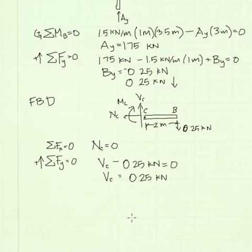Summing forces in the y direction: our internal shear force V_C pointing upward is positive, minus 0.25 kilonewtons from the force at B equals zero. Therefore, V_C equals 0.25 kilonewtons.